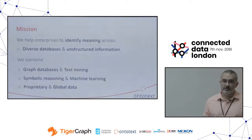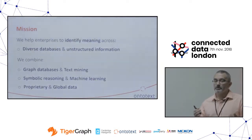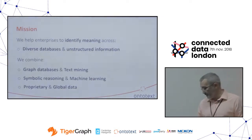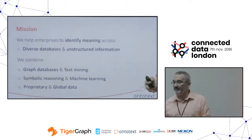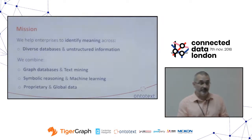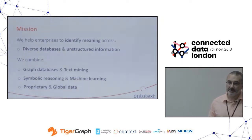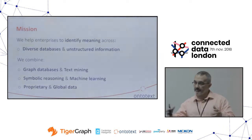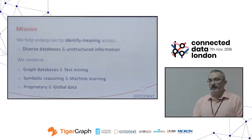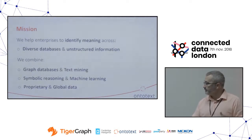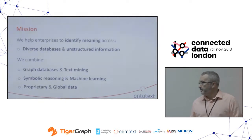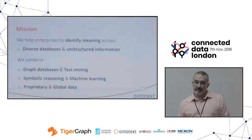What we're actually trying to do — what came up as the mission of a company that started as a technology company — is helping enterprises combine diverse data, link it to content, and extract information from unstructured content. Technology-wise, we do graph database and text mining.